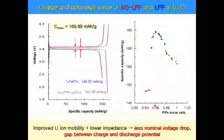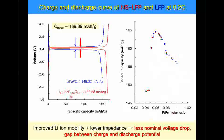Improved Li-ion mobility and lower impedance result in less nominal voltage drop. When we find the optimal ratio of non-stoichiometry LFP, the optimal composition is LiFePO4 with P at 0.96 and oxygen at 3.94, giving maximum capacity. However, when we decrease the oxygen amount further, we see dramatic drops in capacity, indicating breakage of the crystal structure.